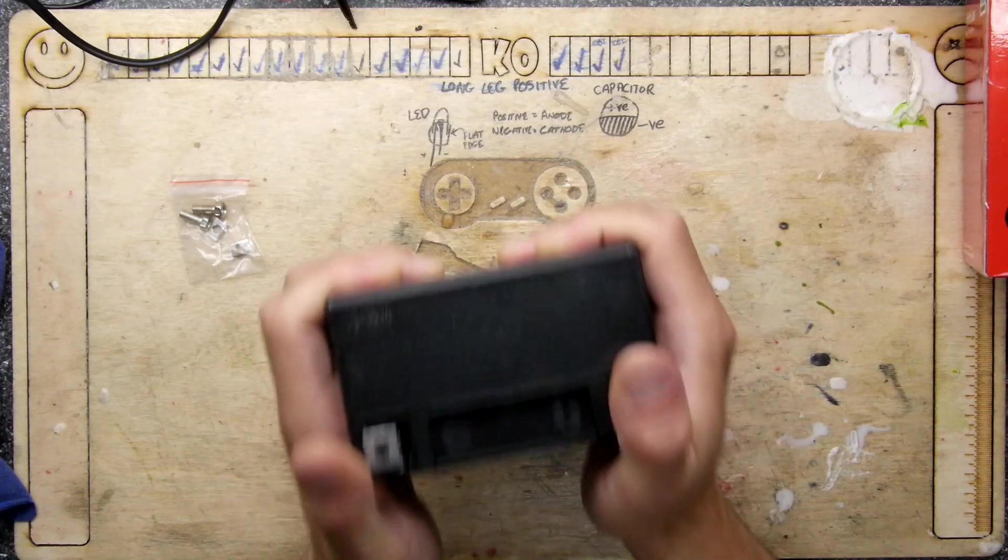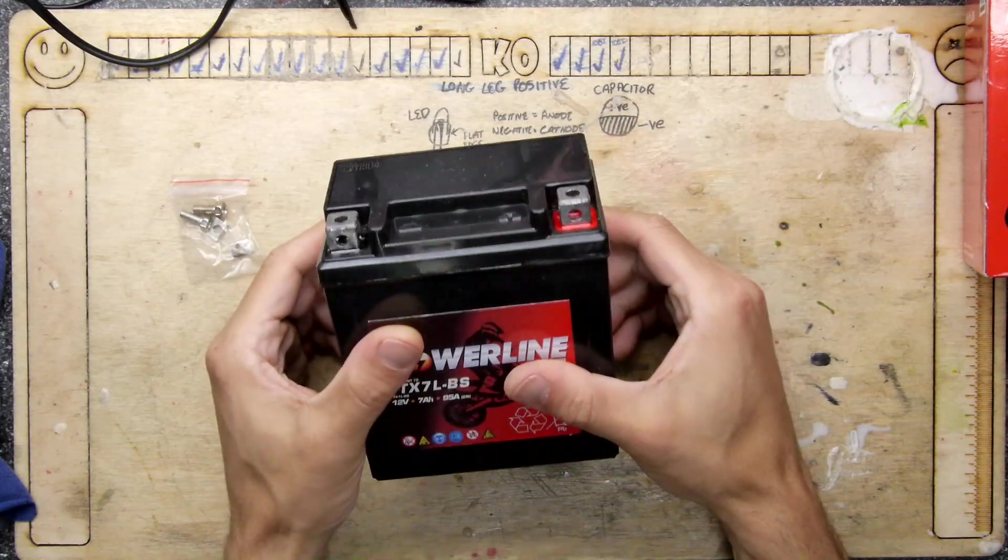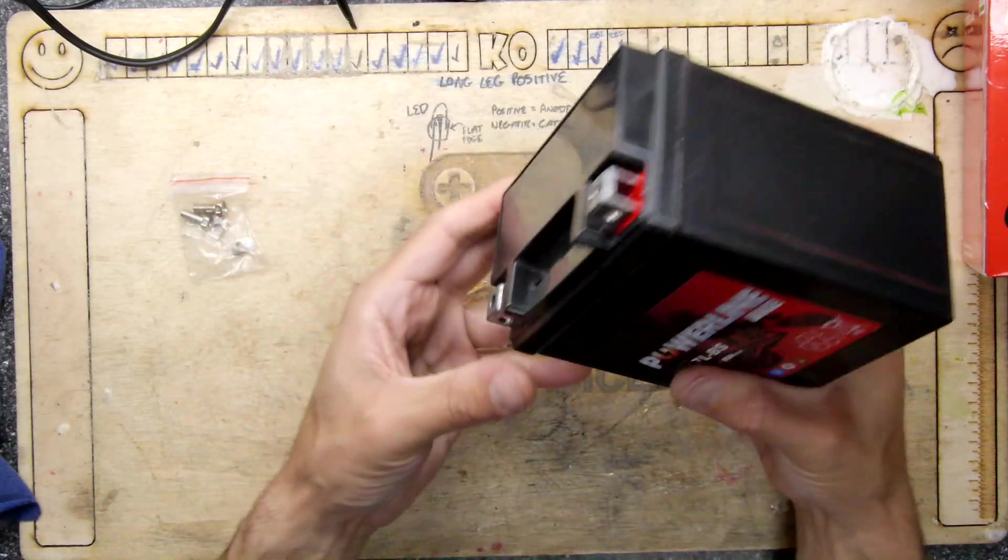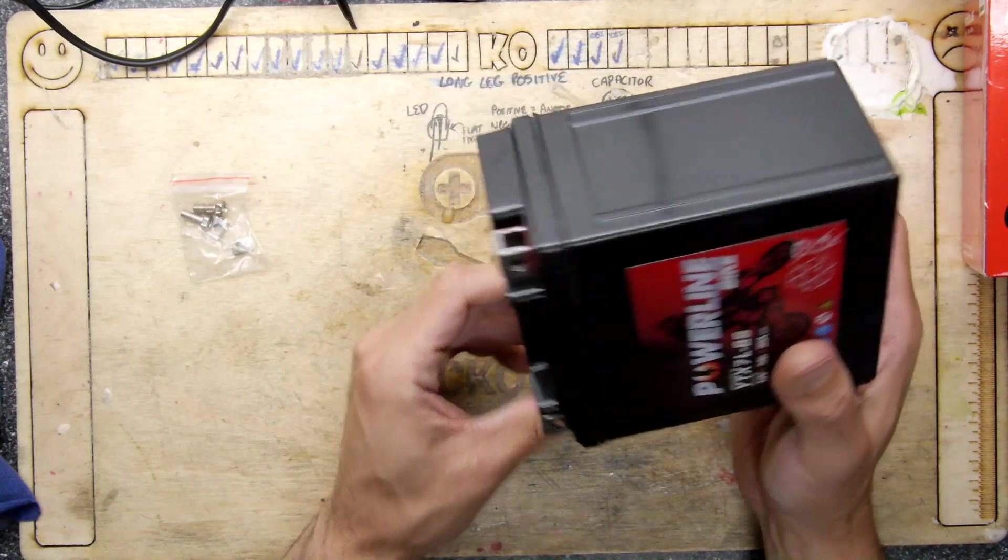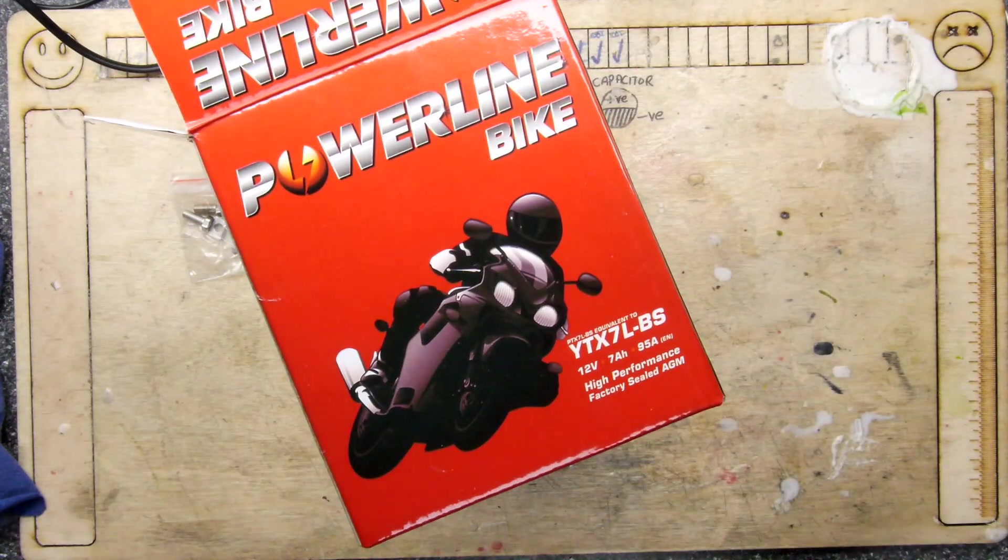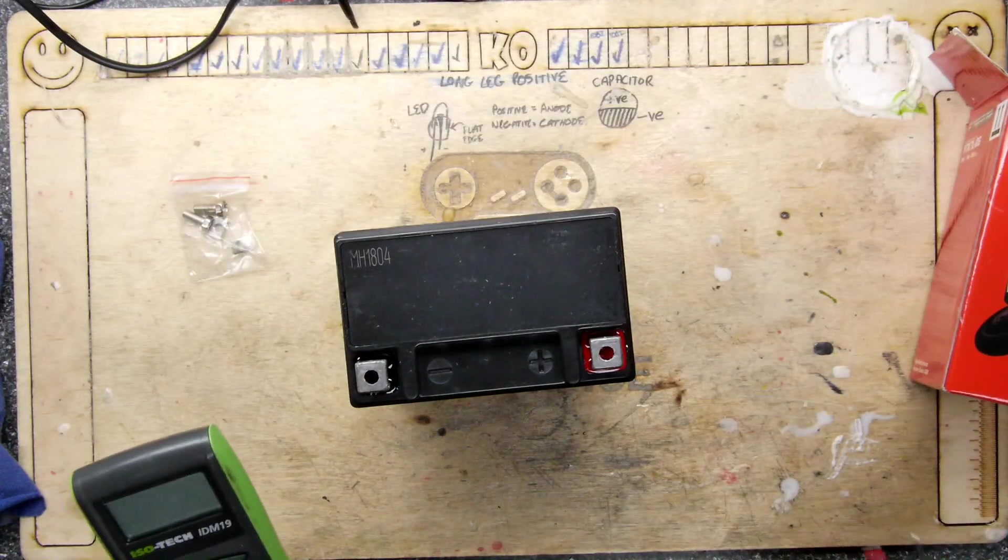I normally use these gel-like batteries which have a matrix in there of fiber. The idea is because in motorbikes they sit in weird angles, you don't want them to leak out. However, it does have a picture of a motorbike on the cover, so that's going to be good.